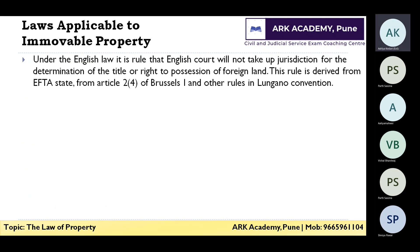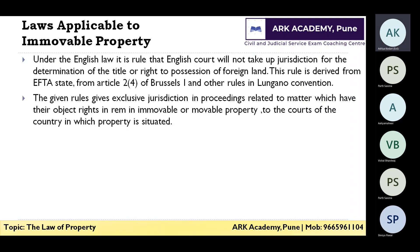Under English law, it is a rule that an English court will not take up jurisdiction for the determination of title or right of possession of foreign land. This rule is derived from the EFTA states — Switzerland, Norway, and Ireland — and from Articles 2 and 4 of Brussels 1 and the Lugano Convention. These rules give exclusive jurisdiction in proceedings related to immovable or movable property to the courts of the country in which the property is situated.